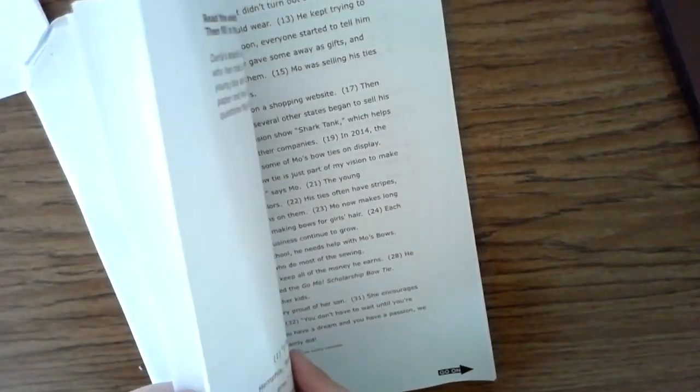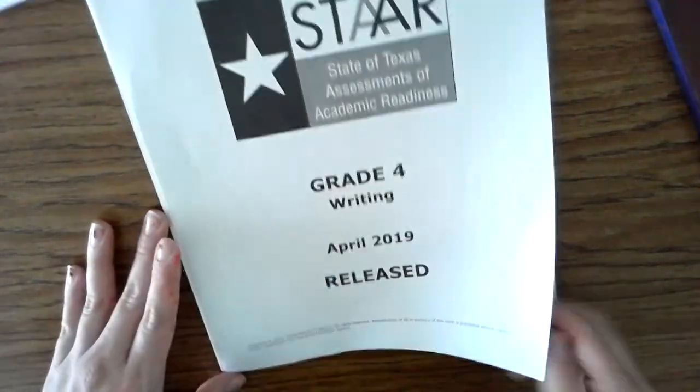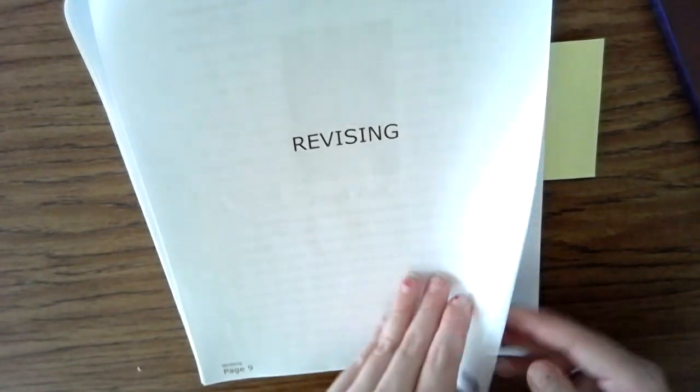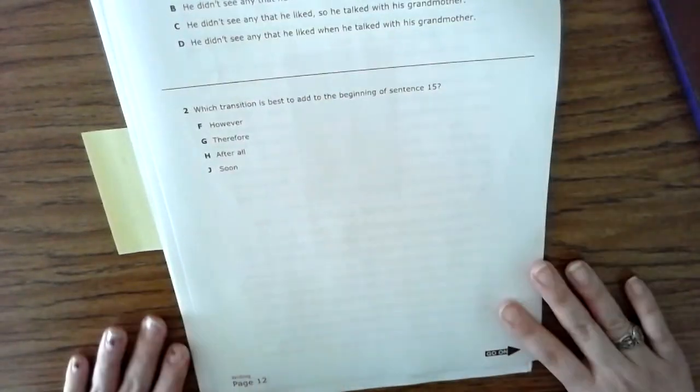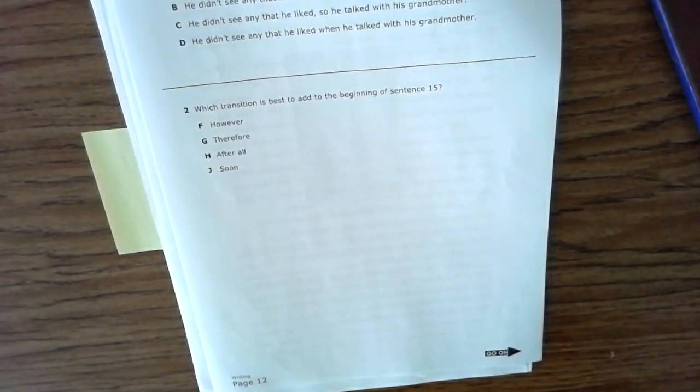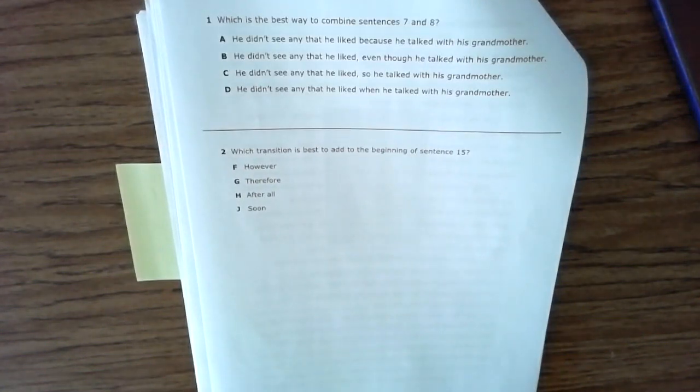All right guys, this is the fourth grade writing STAAR test. We are going to be reading the revising section, which is the first section in your multiple choice. Number one: Which is the best way to combine sentences seven and eight? A: He didn't see any that he liked because he talked with his grandmother. B: He didn't see any that he liked even though he talked with his grandmother. C: He didn't see any that he liked so he talked with his grandmother. D: He didn't see any that he liked when he talked with his grandmother.